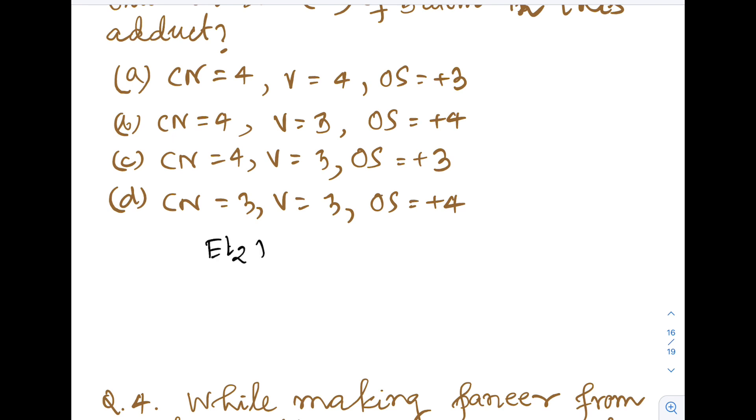At first, we have to write the reaction and structure of the adduct. BF3 reacts with Et2O. This is an acid-base reaction. Et2O, diethyl ether, acts as Lewis base. Boron contains vacant p orbital, so BF3 can accept electrons from outside and acts as Lewis acid.